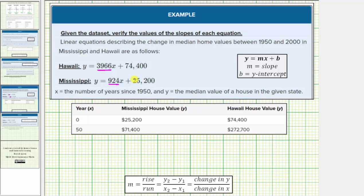But we're asked to verify the slopes using the table of values provided below. Let's first verify the slope for the equation involving Mississippi. Looking at the first two columns of the table, the first row gives us the ordered pair zero comma 25,200. The second row gives us the ordered pair 50 comma 71,400.